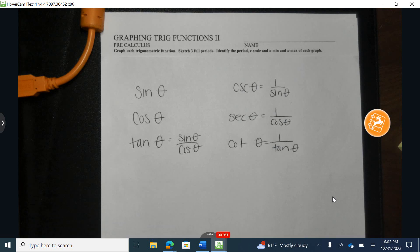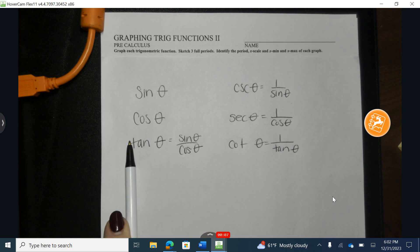Let's review the six trig functions. Sine, cosine, and tangent are our three major trig functions, and tangent can be thought of as sine over cosine.